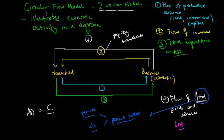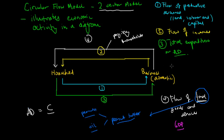That's an illustration of how economic activity occurs in a two sector closed economy model — the two sector circular flow model. In the next lecture, we'll talk about how a five sector circular flow model makes this process a little bit more complicated and more realistic in the general concept of an open economy.